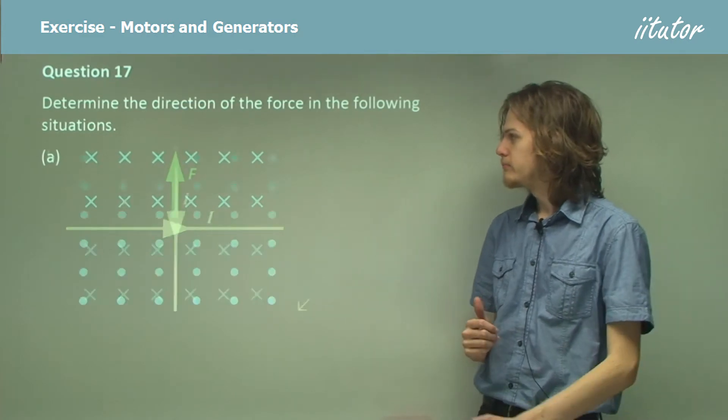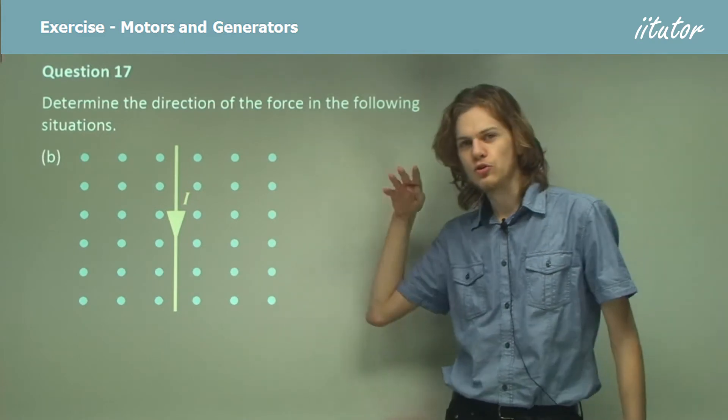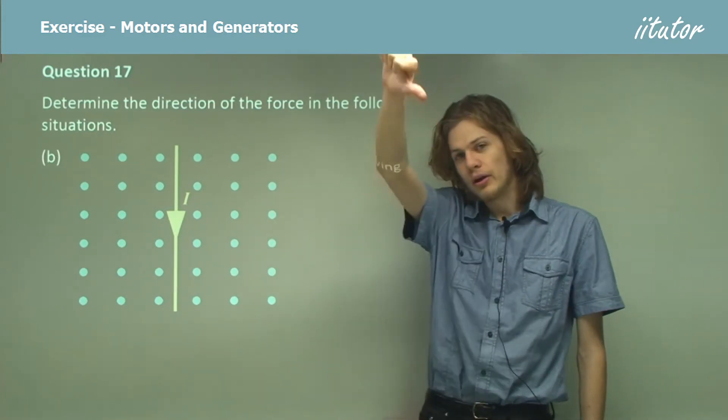All right, part B, how about this situation? Now in this situation, the magnetic field is coming towards you, and the current is going downwards.